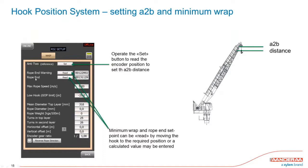The same applies for the rope end pre-warning and final limit. You pay out rope to the rope end — or where you want the crane to stop lowering — and hit 'Read' at the warning limit position, then 'Read' again at the final stop limit position.